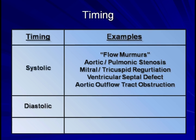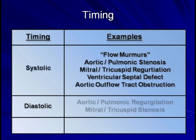Diastolic murmurs include aortic and pulmonic regurgitation, and mitral and tricuspid stenosis. Among American adults, detectable diastolic murmurs are almost always due to aortic regurgitation.